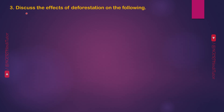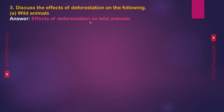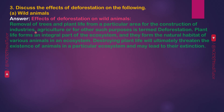Question 3: Discuss the effects of deforestation on wild animals. Removal of trees and plant life from a particular area for the construction of industries, agriculture or for other such purposes is termed deforestation. Plant life forms an integral part of the ecosystem and forms the natural habitat of various animals. Destroying plant life will ultimately threaten the existence of animals in a particular ecosystem and may lead to their extinction.